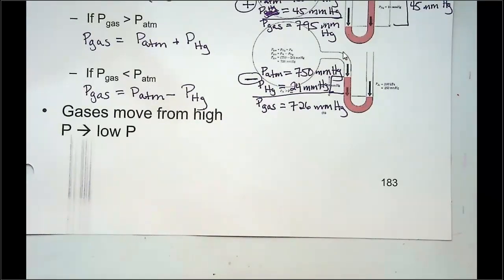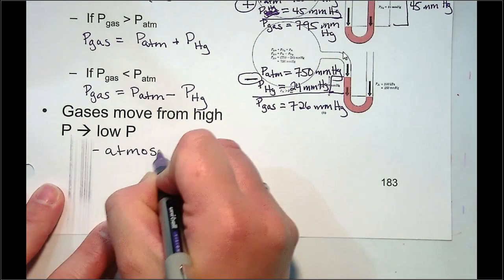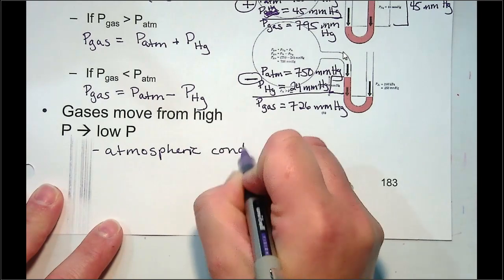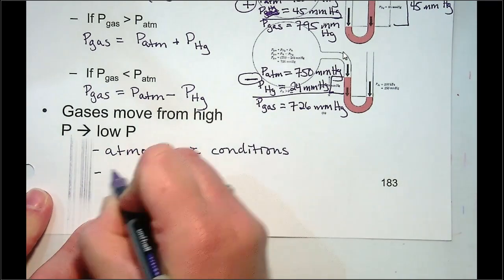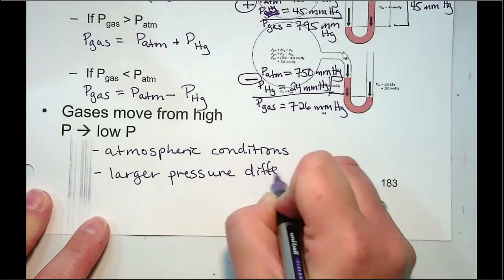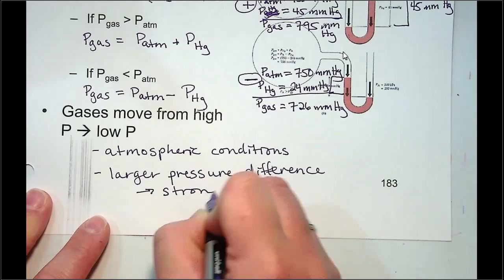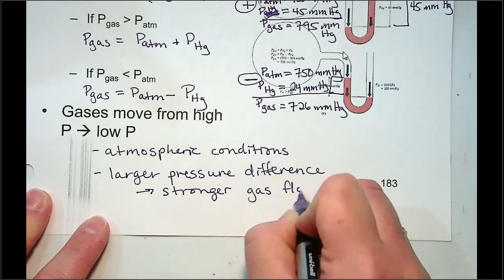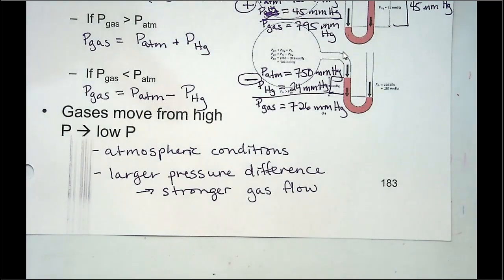In general, gas moves from areas of high pressure to low pressure, and this is what leads to weather conditions. If you have a larger pressure difference, you get stronger gas flow. If a low pressure system is quickly replaced by a high pressure system, you notice wind or extreme weather — that's because of how gases interact in the atmosphere.